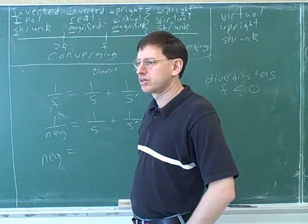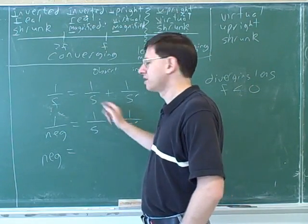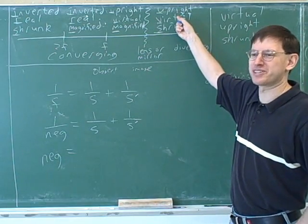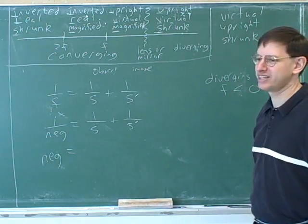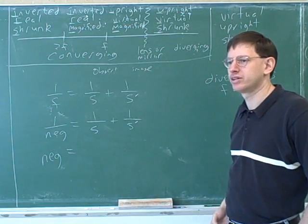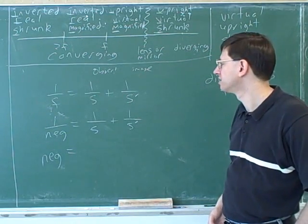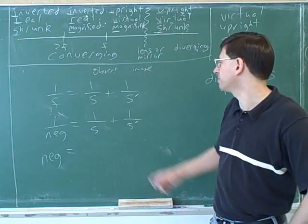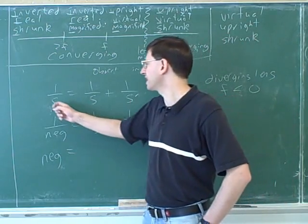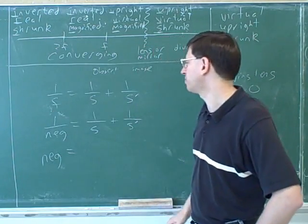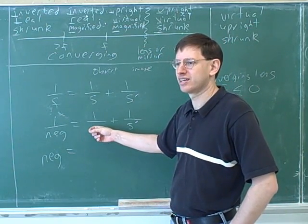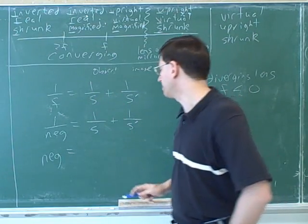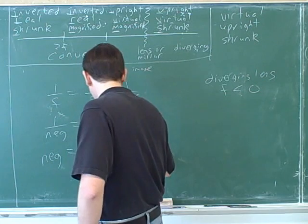We knew the sign of F. Do we know either of these two other signs? We know the image is going to be... but remember, we can't assume this anymore — this is what we're trying to prove. We're trying to show how we know this. Diverging means a negative focal point. What do we know about the sign of the object distance? In a simple problem, the object distance is always positive.